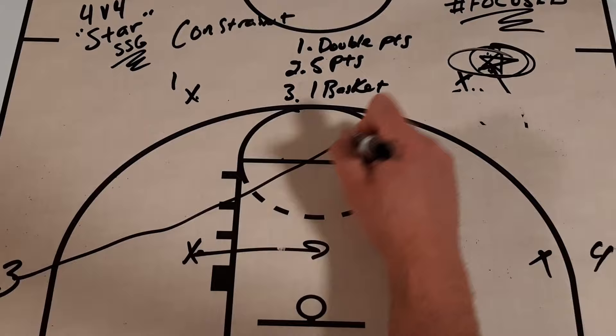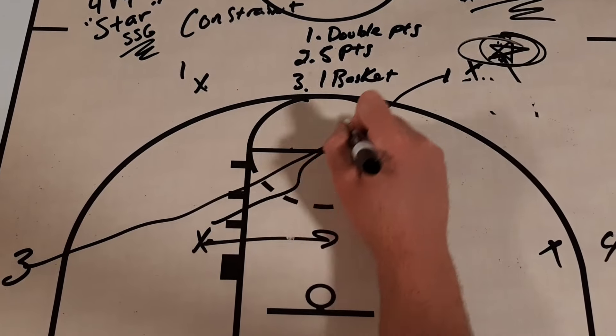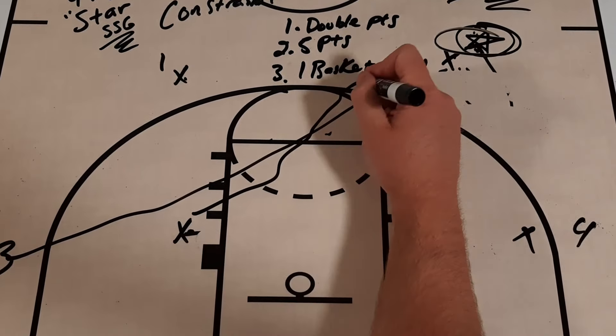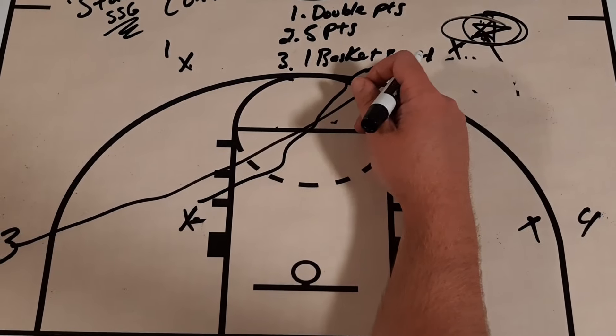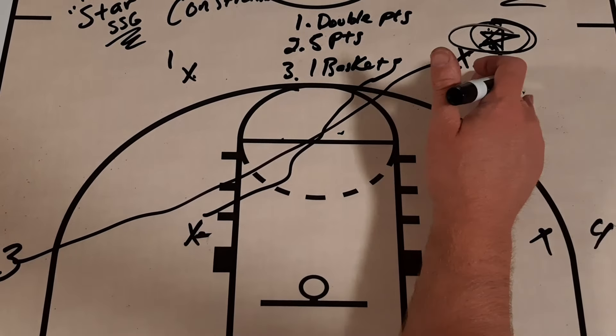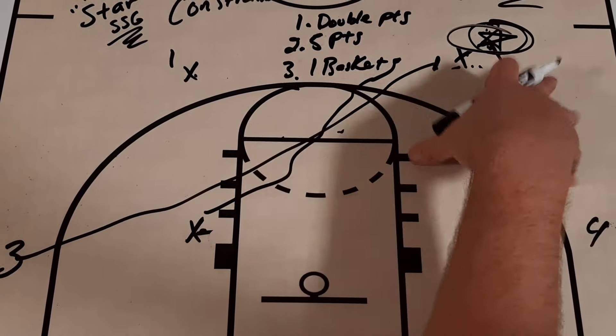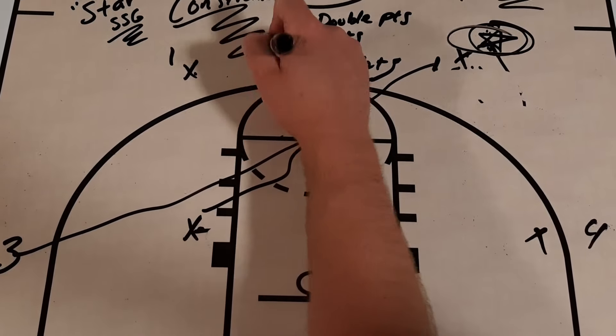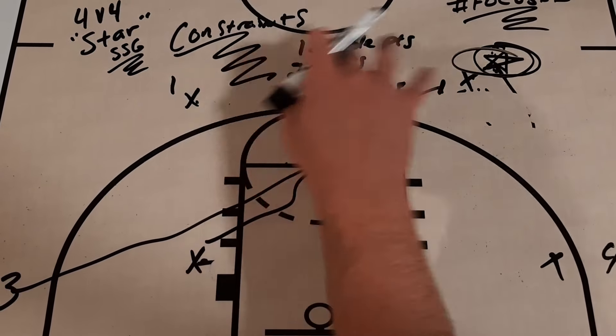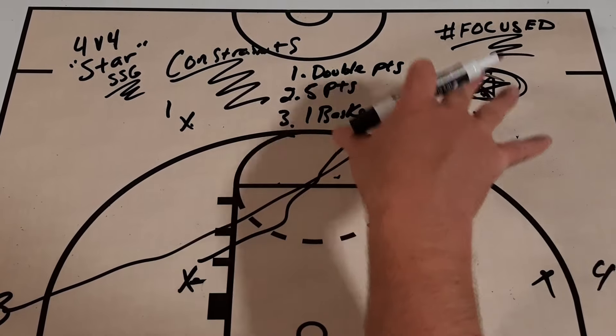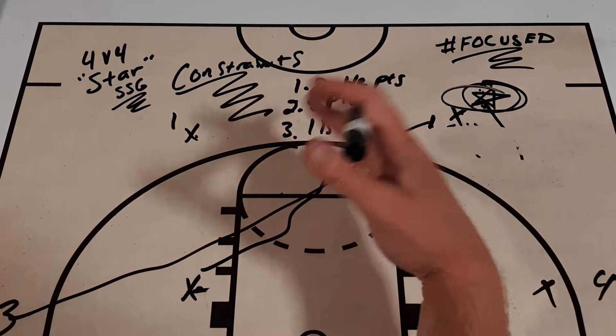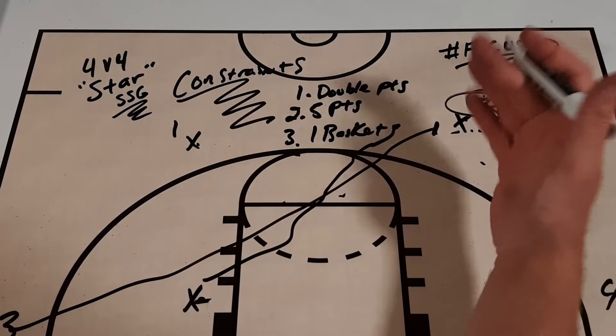And you're going to have to blitz them, or whatever your coverage is going to be in the ball screen. This player can only score in the post. So you can put a number of different constraints on this drill, as you can with any SSG, that really can diversify it for your players.